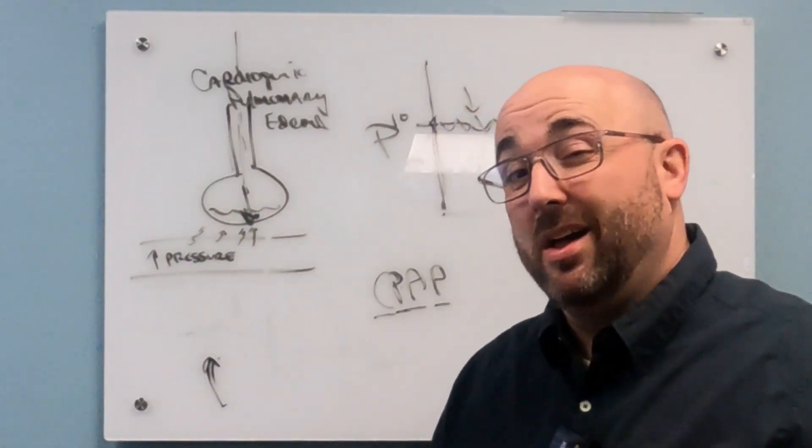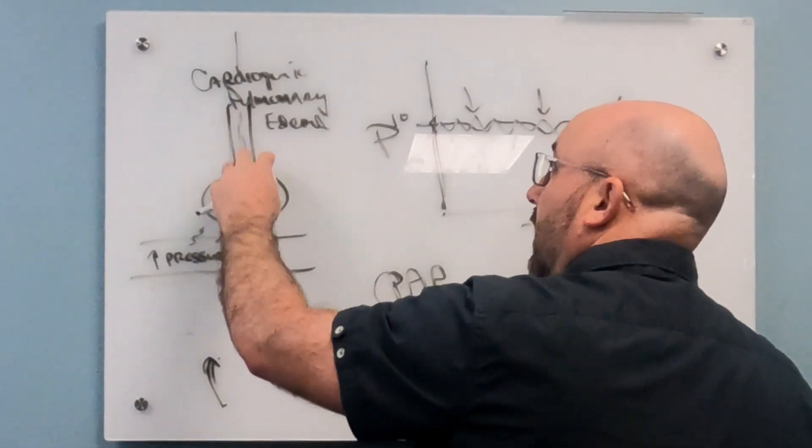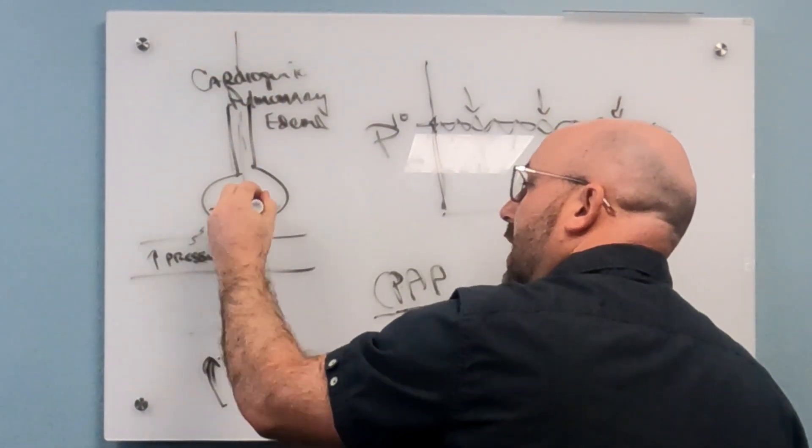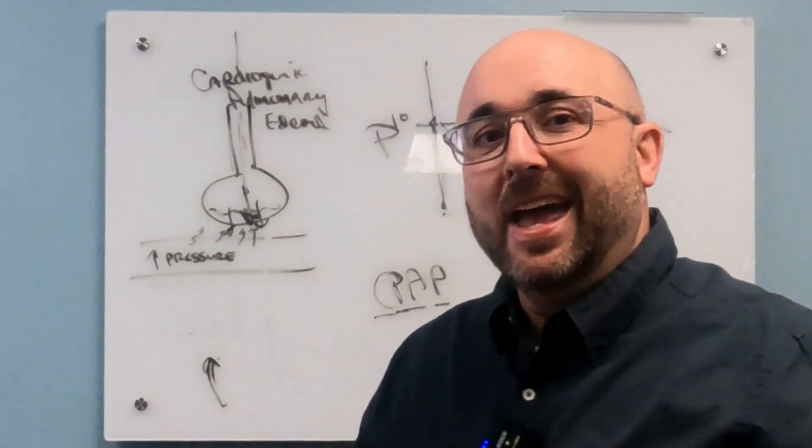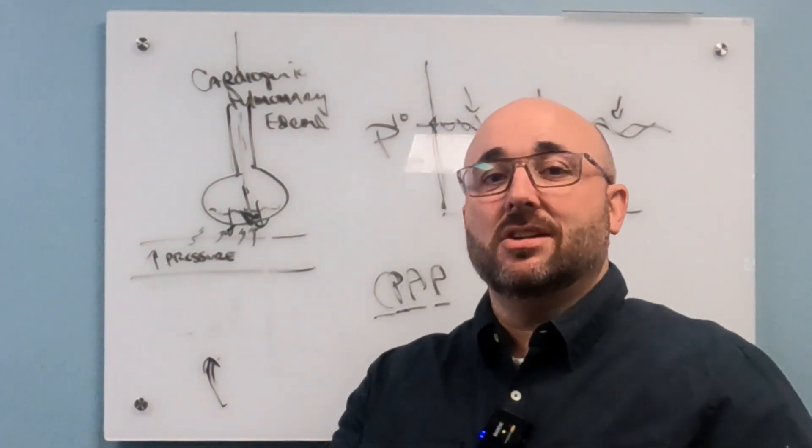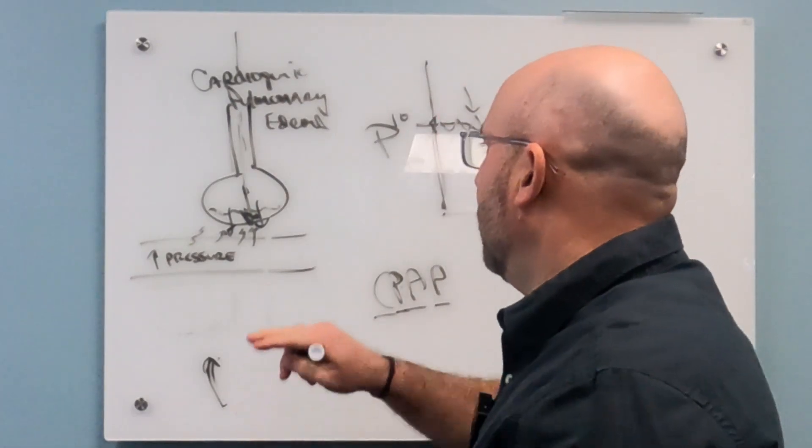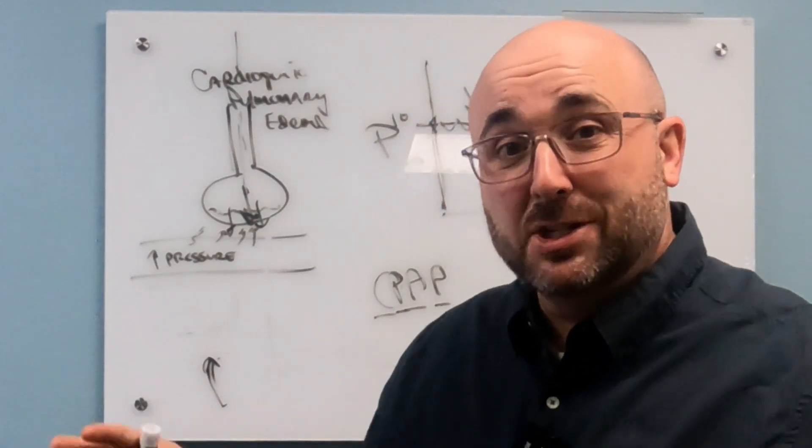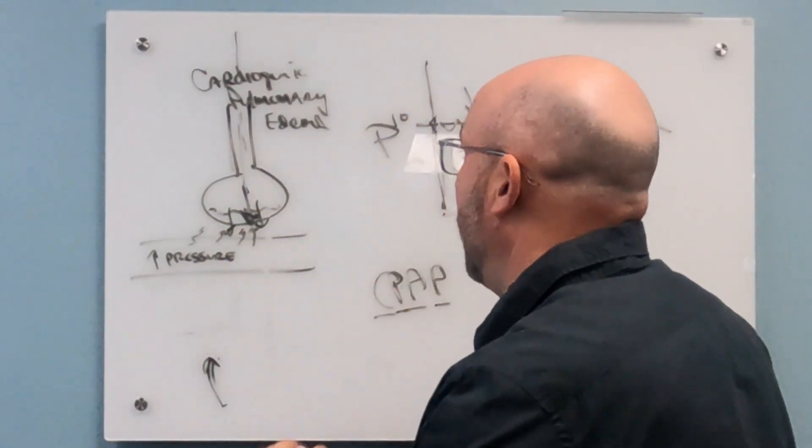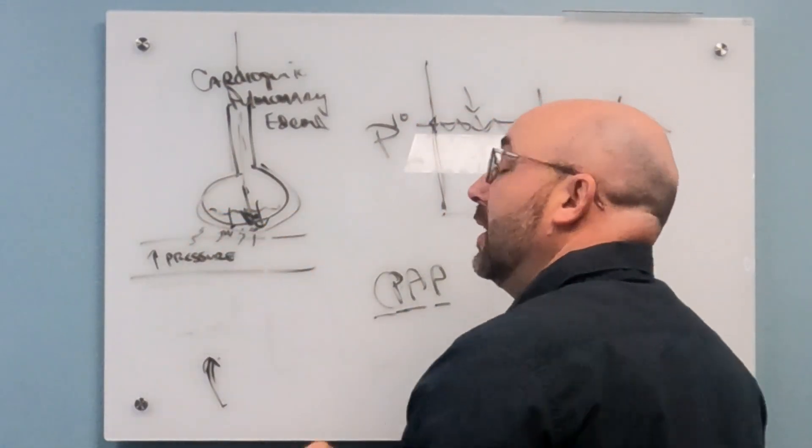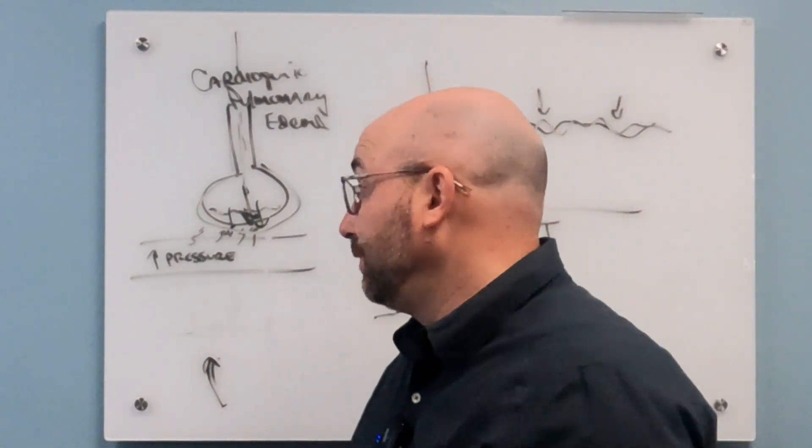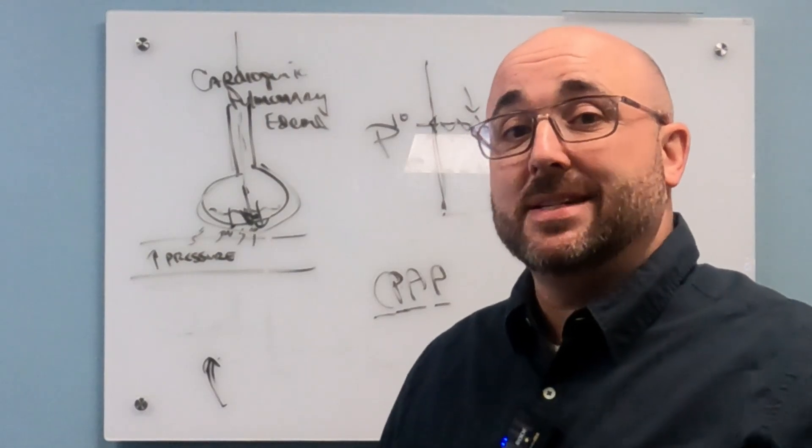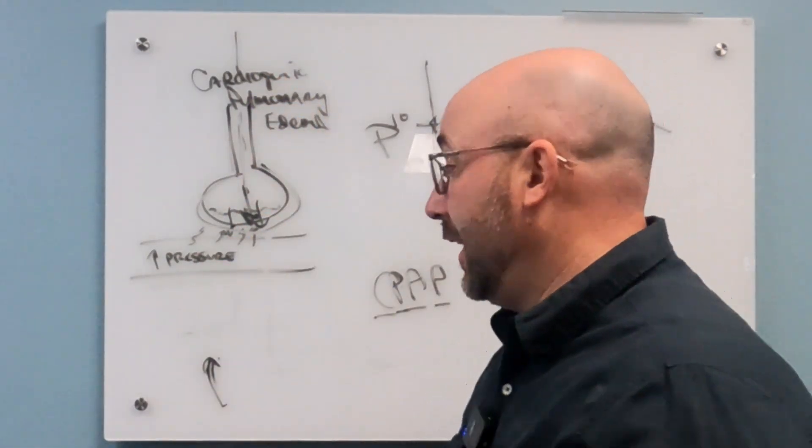CPAP works really well in these cases because it's a really quick fix because you're actually pushing that pressure and forcing that fluid back across into the vasculature. And then you're also increasing the amount of oxygen delivering and you're recruiting alveoli, you're decreasing their functional residual space. So it's all a really good thing when we start to use CPAP and you can get much quicker results with that. Given a diuretic, yeah, it does work quick, but it's not nearly as quick as using a CPAP with a diuretic.